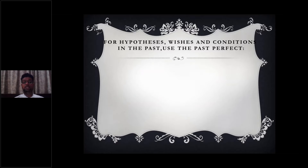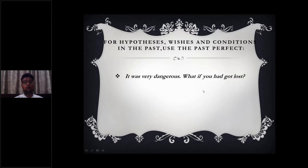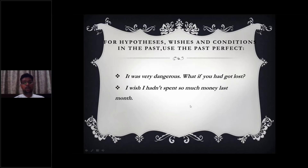For hypotheses, wishes, and conditions in the past, we make use of the past perfect tense. For example: 'It was very dangerous. What if you had got lost?' Somebody is making a hypothesis and we have used the past perfect tense. Another example: 'I wish I hadn't spent so much money last month' — again, somebody is wishing or assuming something, and again we have made use of the past perfect tense.